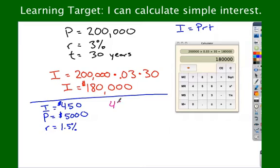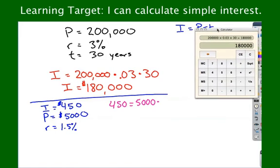I is $450, so instead of writing I, I write $450. P is $5,000, so instead of writing P, I write $5,000. R is 0.015. And what I need to know here, the missing value is T, the time. How long did it take me to make $450 if I had an interest rate of one and a half percent and a principal of $5,000? Well, five times 0.015, this is going to take a little bit of algebra. So I multiply these two together, and I get $75 times T equals $450.